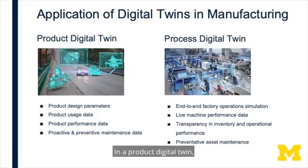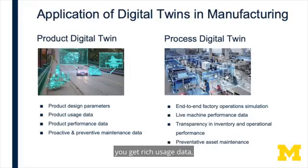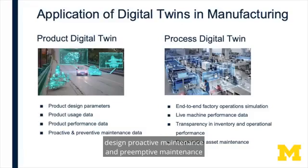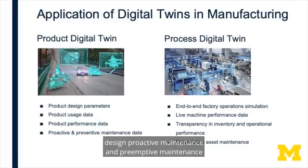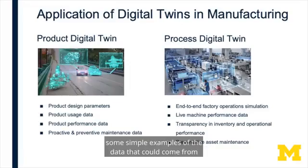In a product digital twin, you collect a lot of product performance data. You can get information about design parameters and how they are changing when the product is being used. You get rich usage data, and you can also detect faults that are likely to occur — thereby helping managers design proactive and preemptive maintenance of the products. Those are some simple examples of data that could come from product digital twins.